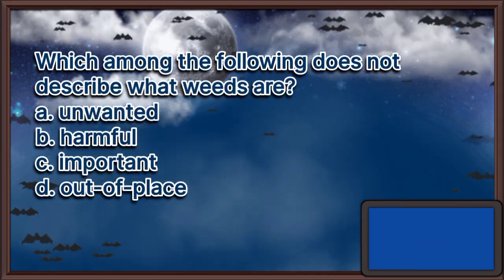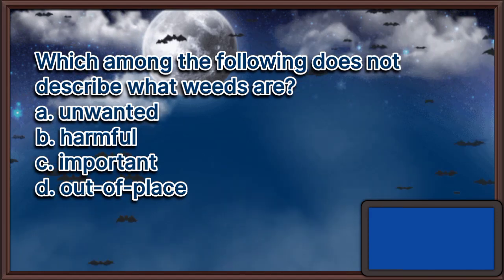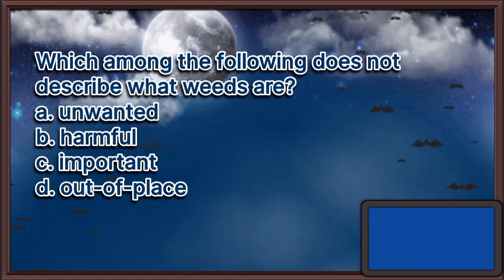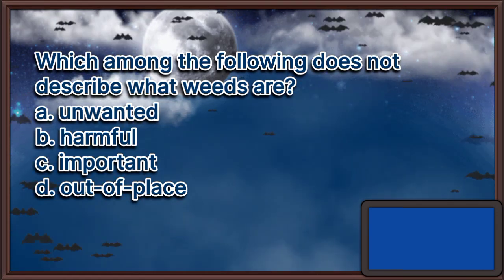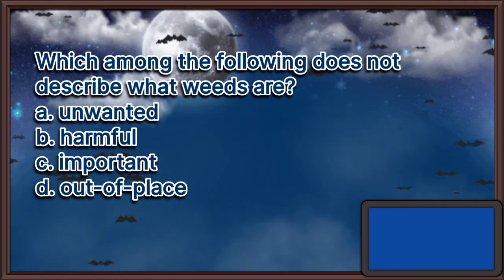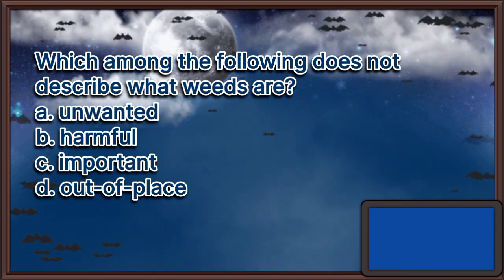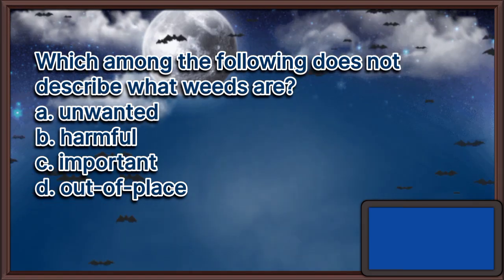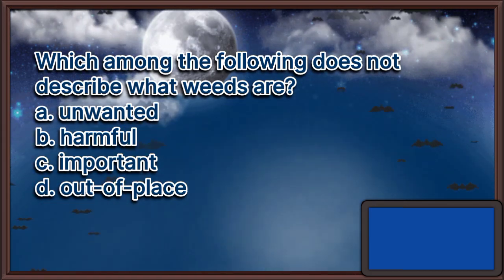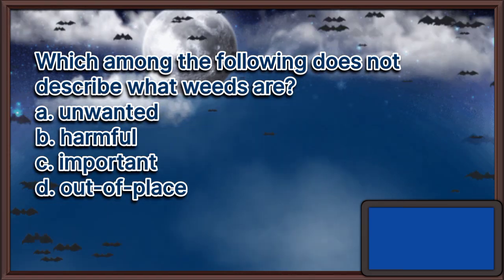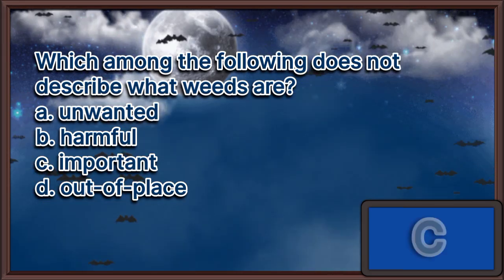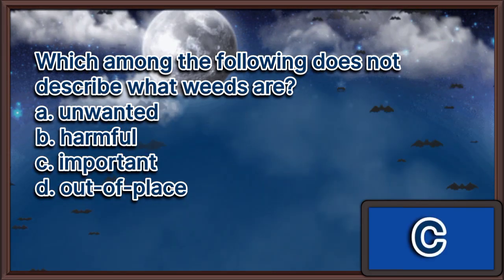Which among the following does not describe what weeds are? A. Unwanted, B. Harmful, C. Important, D. Out of place. The answer is letter C.